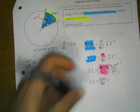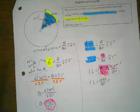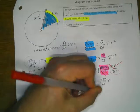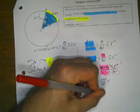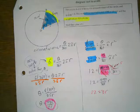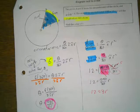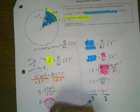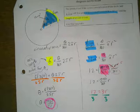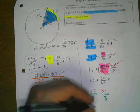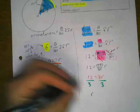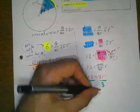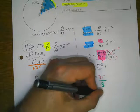The final step is to divide both sides by 3, and we end up with r = 4. The units are centimeters.